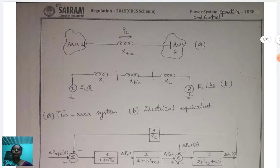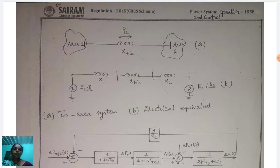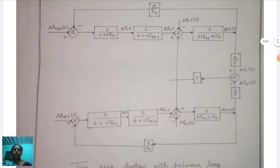In the two-area system, area 1 and area 2 interchange power P12, indicated by an arrow mark. X_tie is the reactance of the tie line. Figure A represents the two-area system, and figure B is the electrical equivalent circuit. In figure B, area 1 has voltage E1 at angle δ1 with reactance X1, followed by the tie line reactance. Area 2 has angle δ2 with its respective reactance X2. Now we move to the two-area system with the primary loop block diagram.